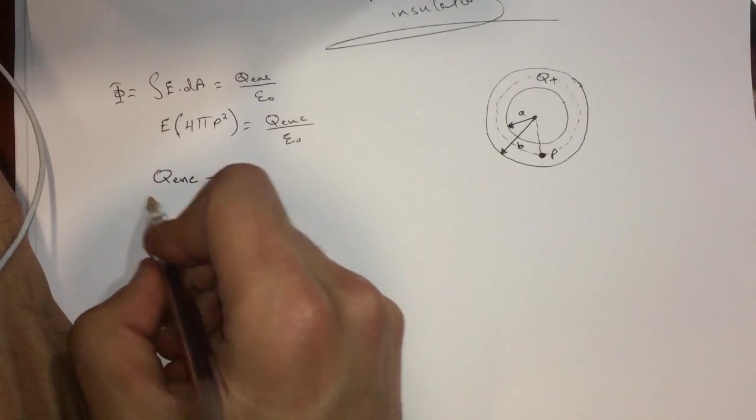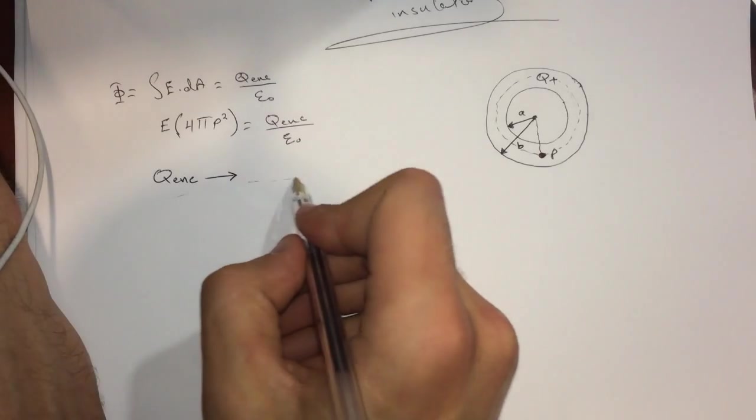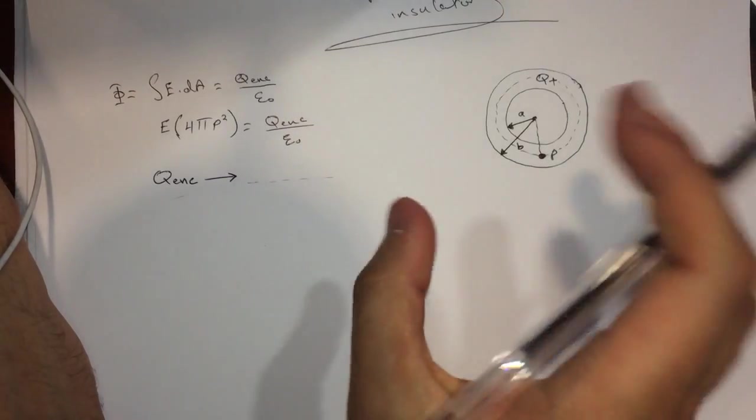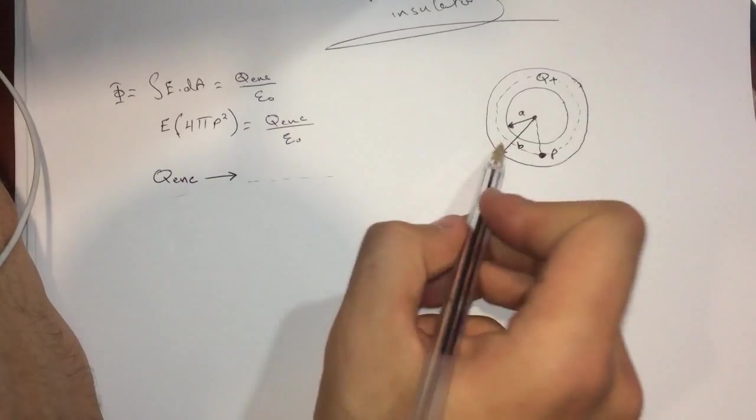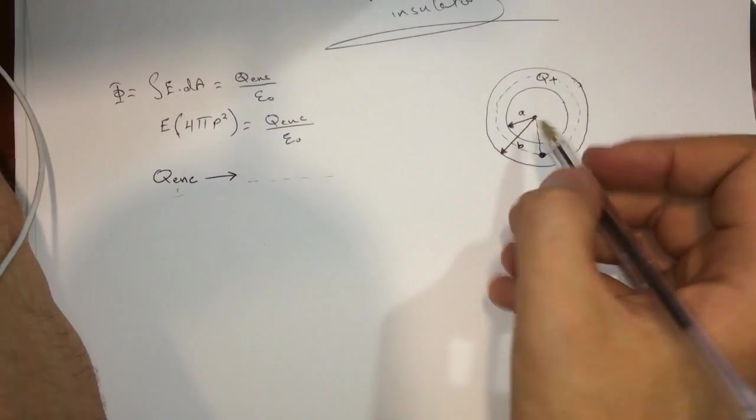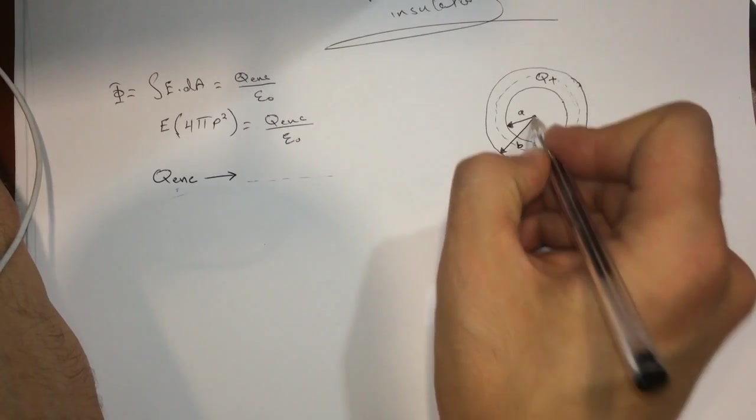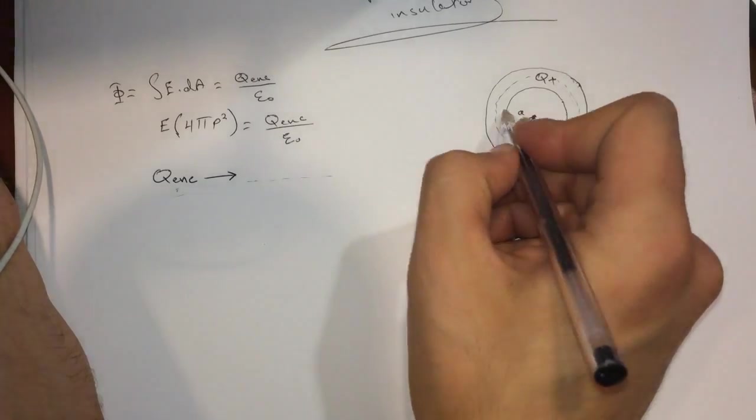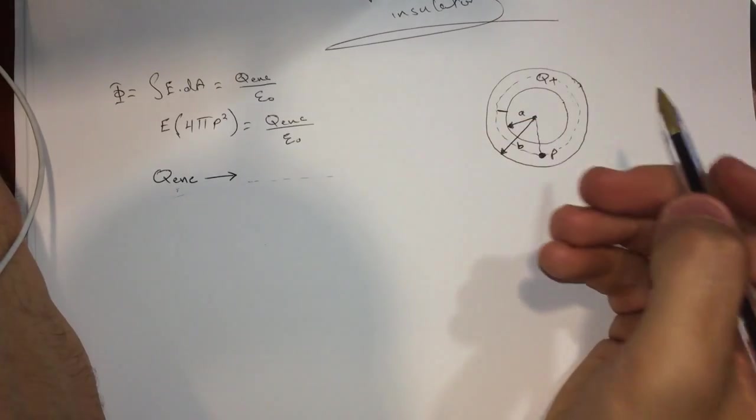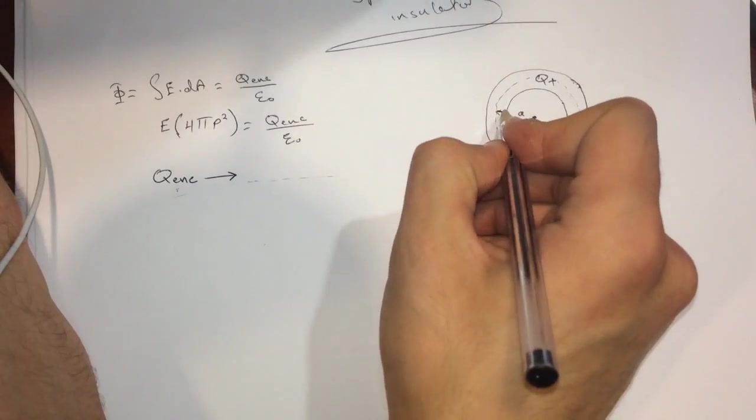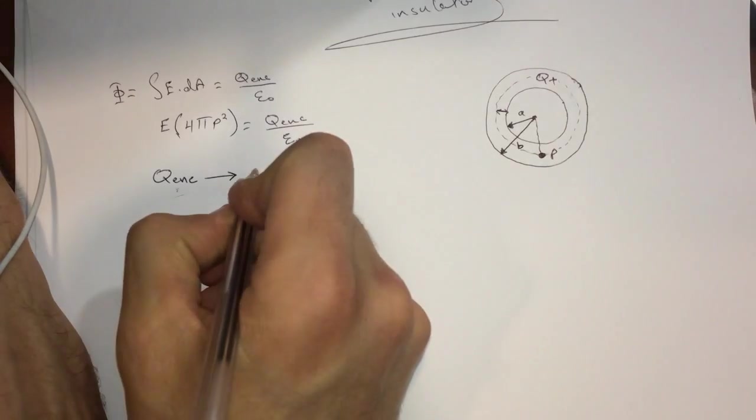The way I do it is that I put the charge and then I put the volume that it's in. Now what is the volume that the Q enclosed is in? It's in between the volume P and A, right? From here to here, that's what we're looking for.